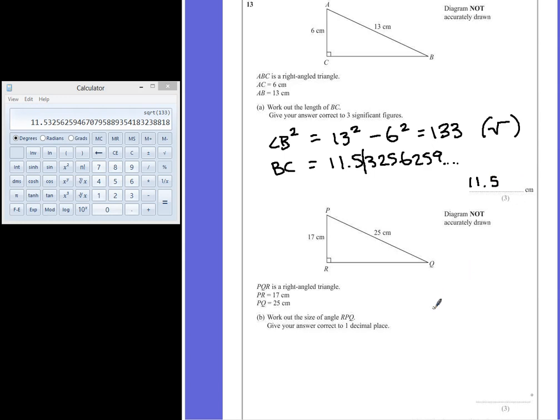Question B is a different triangle. Again, not drawn accurately. PQR is a right-angled triangle, where PR is 17cm, PQ is 25cm.